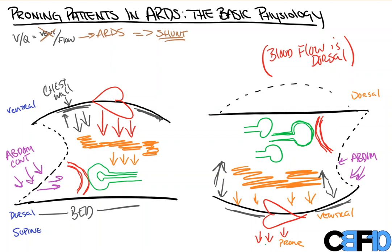So that's the basic physiology of proning patients, how we improve our VQ matching, and as a result, decrease our shunt, which our shunt fraction is kind of what we're trying to do, and improve our hypoxemia.